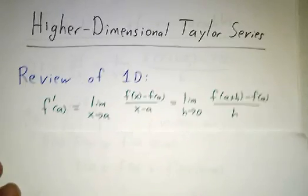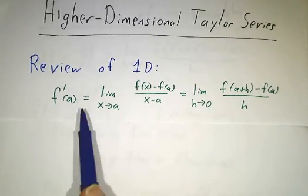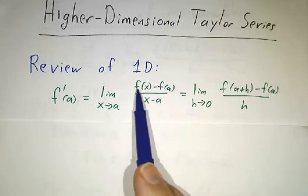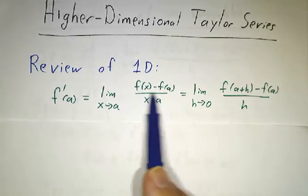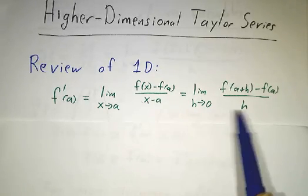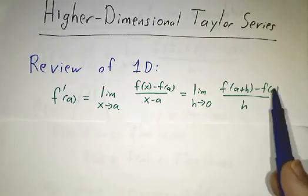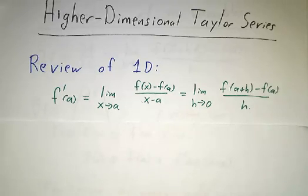So, a reminder of what's happening in one dimension. We have a derivative, and a derivative is a limit of the change in the output divided by the change in the input. We often write it as a limit as h goes to 0 of f(a+h) - f(a) divided by h.